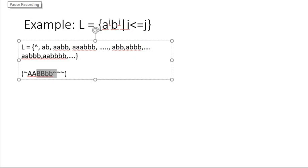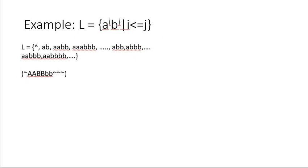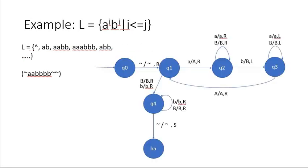Let us see how our Turing machine will look. This will be my Turing machine for the language a^i b^j where i ≤ j. We should not concentrate on this part because this part is the same as before — it converts one small a into capital A and one small b into capital B. But once all small a's have been converted into capital A, what will happen? Let us trace it.